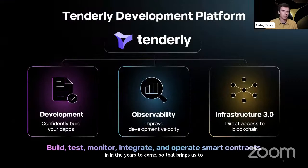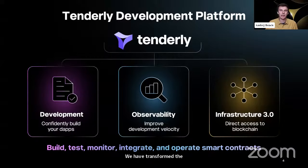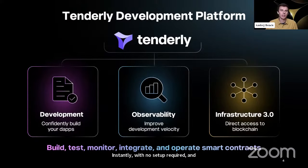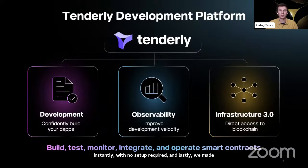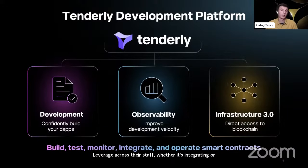So that brings us to today. Right now Tenderly touches most parts of the dApp development process. With the Tenderly visual debugger, transaction simulator, and gas profiler — all industry firsts — we have transformed the way smart contract development is done. Because Tenderly watches and processes every single transaction coming through the network, you can retroactively monitor and debug any transaction from any block instantly with no setup required. We've also made all the power and data of the Tenderly platform available through our APIs that we affectionately call Infrastructure 3.0.